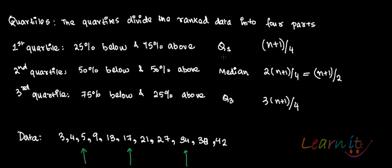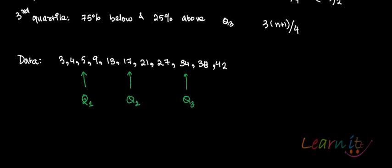So the first quartile is Q1 which could be calculated as n plus 1 by 4. Third quartile is Q3 which is calculated as 3 n plus 1 by 4 and the second quartile is basically a median which is 2 n plus 1 by 4 which is nothing but n plus 1 by 2. n is the number of observations in the data.